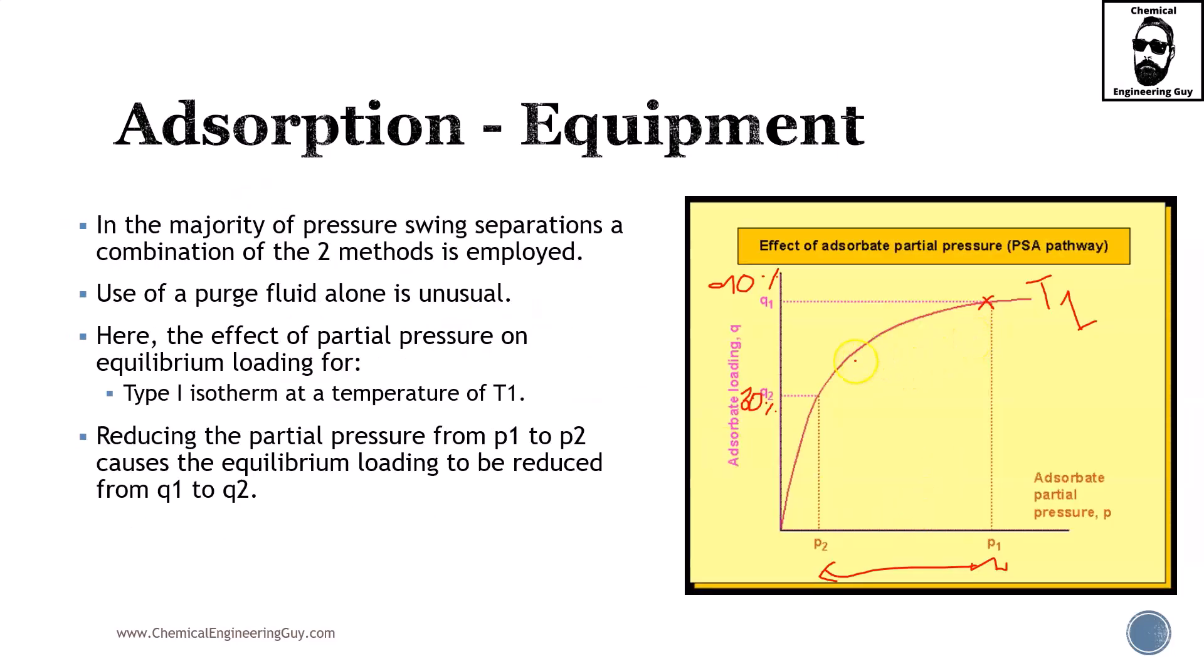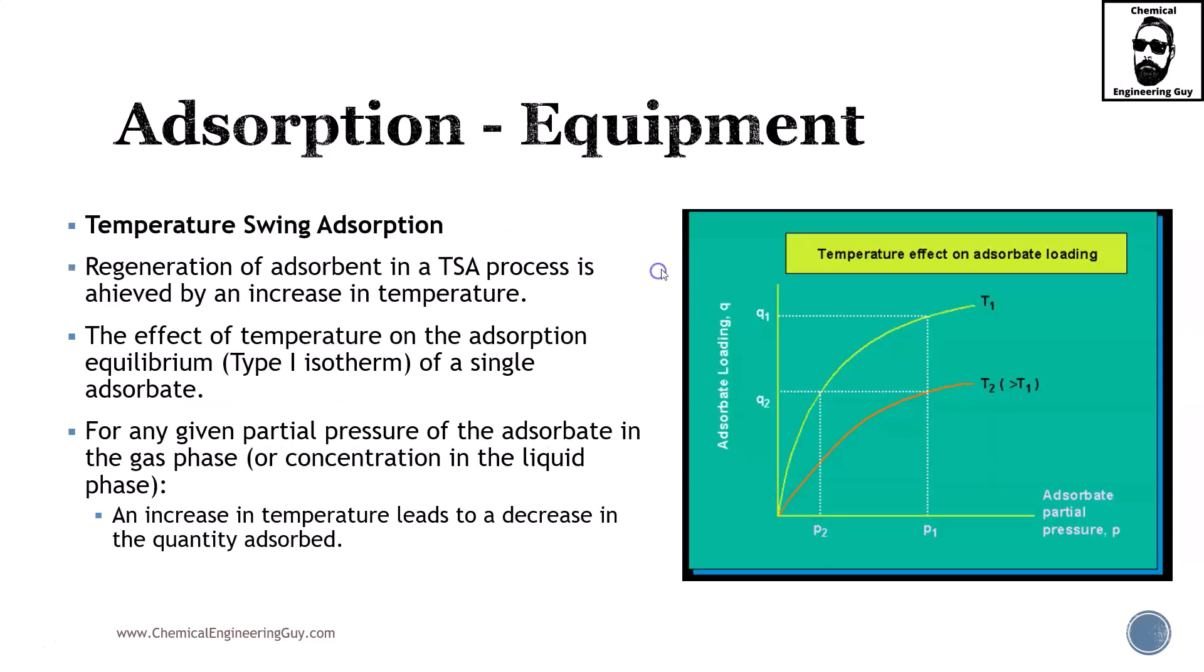Now the problem with this part right here is that you can change pressure, but this will remain, and this remains because this is an isotherm curve. Now what happens if we want to change the temperature on our system, then we're going to be using temperature swing adsorption.